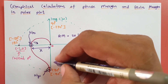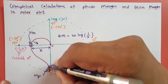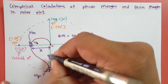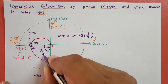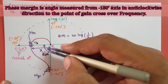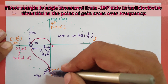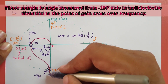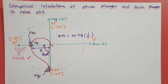To calculate phase margin, you need to trace a line from the center to the gain crossover frequency point. The angle in the anticlockwise direction from the minus 180 degree axis to that line is the phase margin. That is how we identify phase crossover frequency, gain crossover frequency, gain margin, and phase margin.